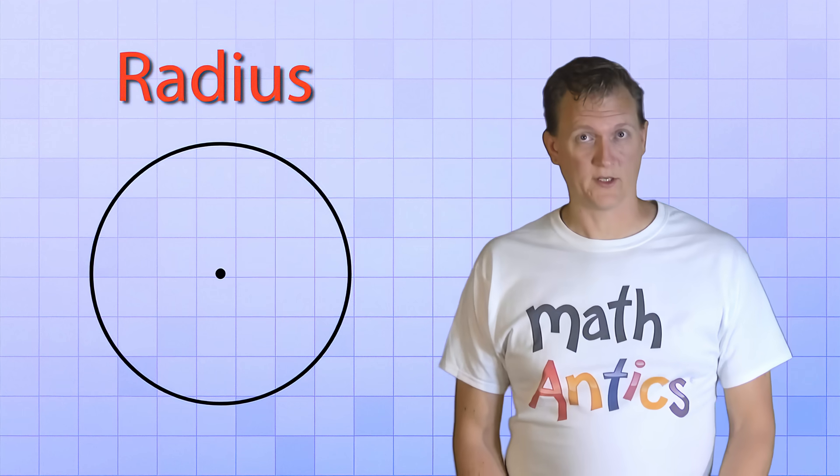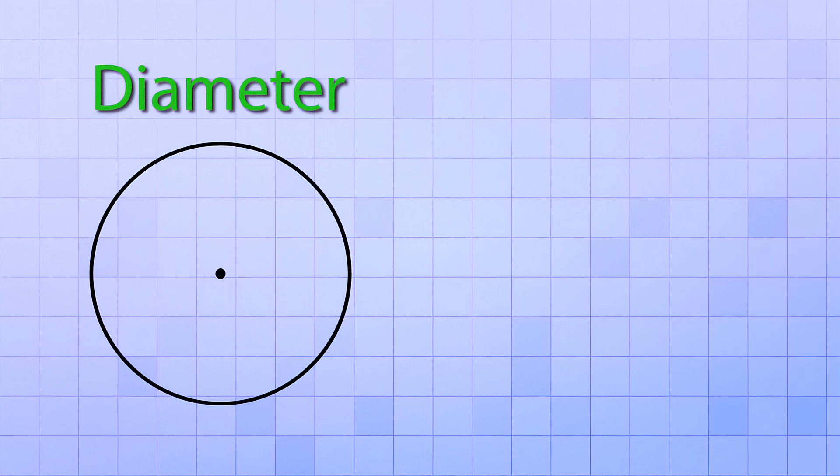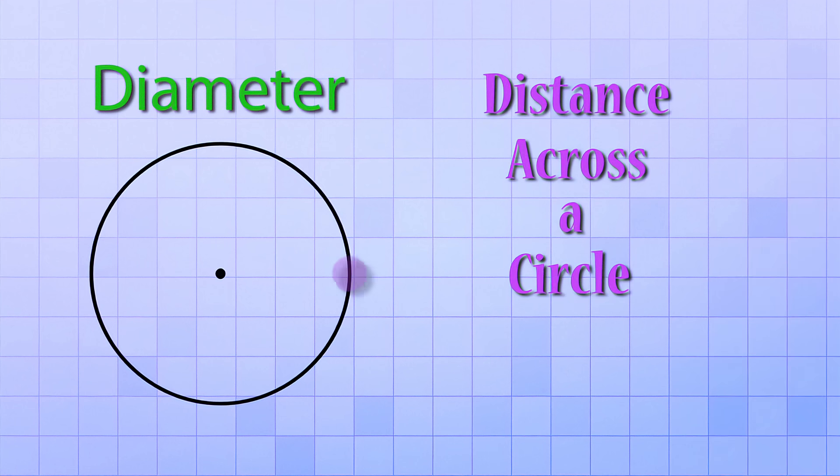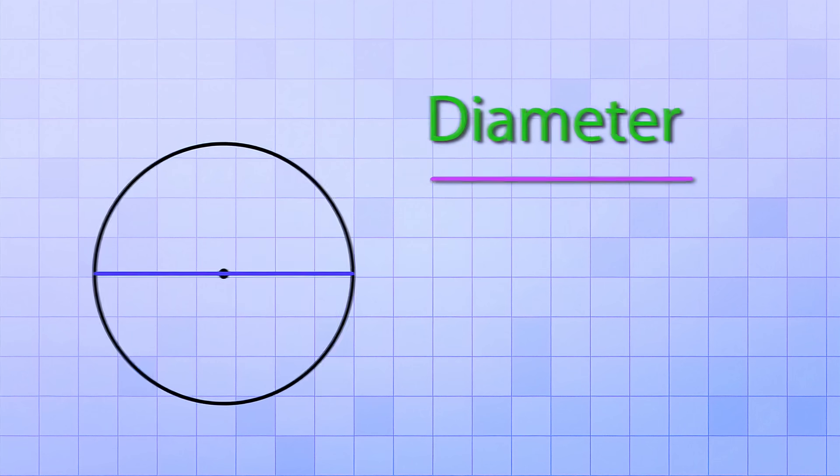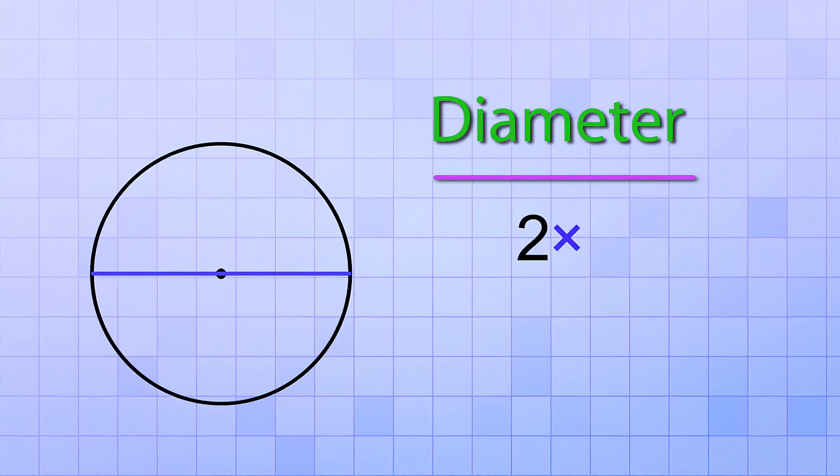Another important circle dimension is called the diameter. The diameter is the distance across the circle. If you start at one point on the circle, and then draw a line straight through the center to the other side, that distance is the diameter. As you can see, the diameter is really just the same as two radius lines drawn in exactly opposite directions. So for any circle, the diameter is always exactly twice as long as the radius.